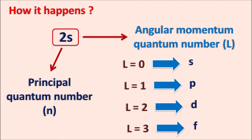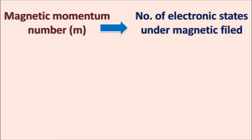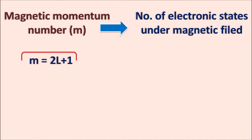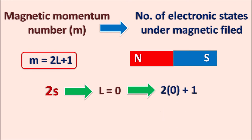By the angular momentum quantum number L we can identify the type of orbital. Now let us see another quantum number — the magnetic quantum number M. This magnetic quantum number M indicates the number of electronic states under an applied magnetic field. The M value depends on the type of orbital and is linked to the angular momentum number: M equals 2L plus 1. For the 2s orbital, L equals 0, so M equals 2 times 0 plus 1, which is 1. That means the 2s orbital exists in a single state.